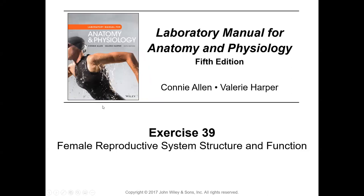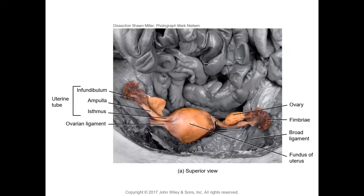Hello everybody, this is Dr. Anju Singh and this lecture is going to be on Exercise 39, Female Reproductive System: Structure and Function from our lab manual. The female reproductive system is made up of the uterus, the fallopian tubes, and the ovaries.